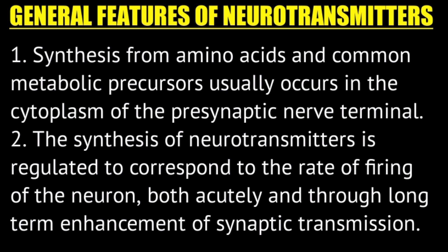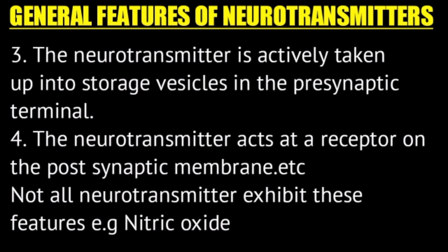Neurotransmitter production is adjusted to the level of stimulus — for example, dopamine can be produced in larger or lesser quantities as needed. Neurotransmitters are actively taken up into storage vesicles in the presynaptic terminal, stored until needed, and then act at receptors on the postsynaptic membrane to generate action potentials. Note that not all neurotransmitters exhibit all these general features — for example, nitric oxide does not.